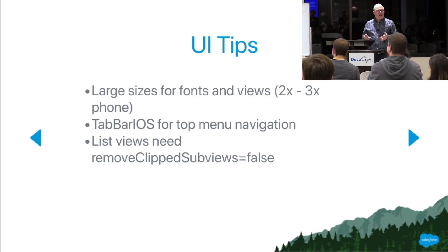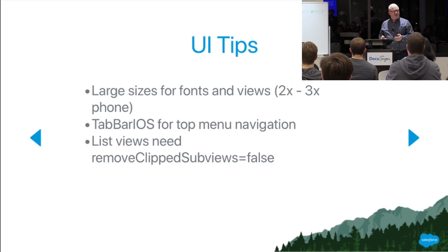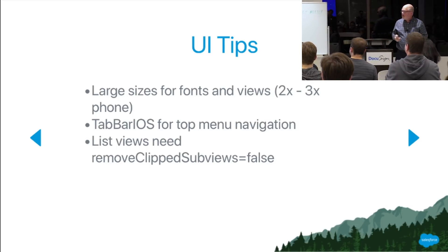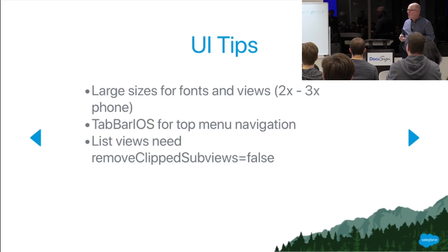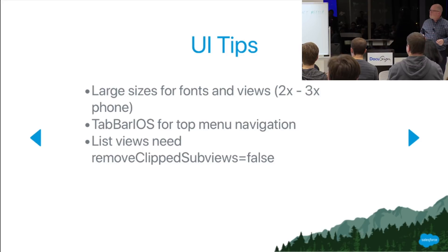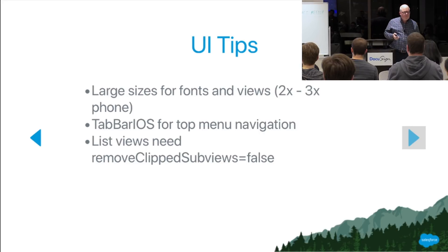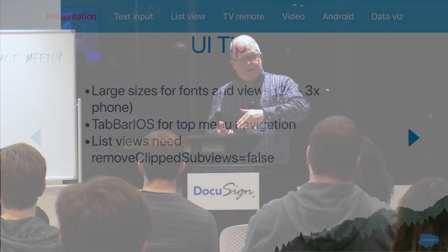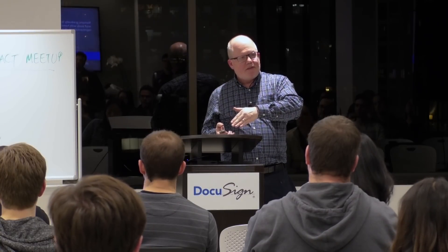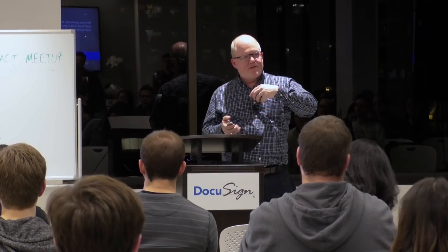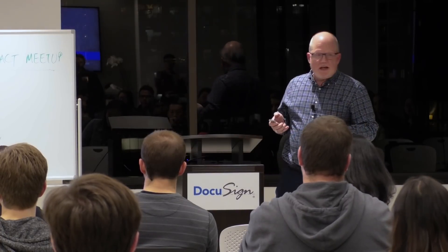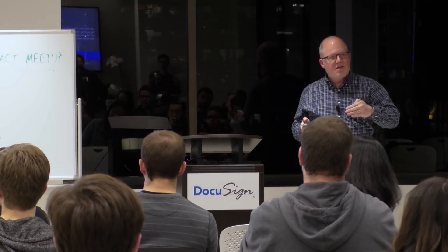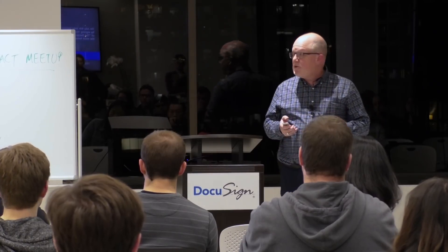We recommend a lot of apps use top menu navigation, and for that there's an iOS native component called tab bar iOS that I'd recommend. There are some issues that arise because of the focus engine — for example, React Native for performance reasons removes sub-views that aren't visible from the view hierarchy in iOS. That works great on iPhone, but the code that decides when a view comes into focus doesn't work very well in those conditions.